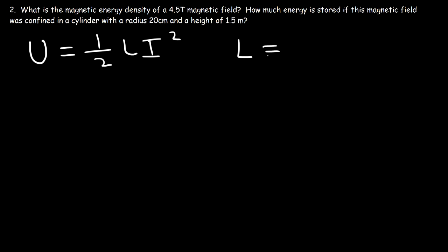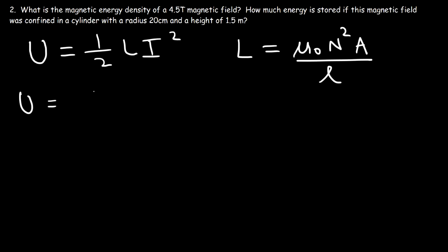The self-inductance of a solenoid is mu zero times n squared times the cross-sectional area divided by the length of the solenoid. Let's replace L with that equation.